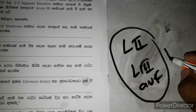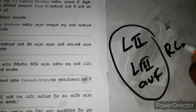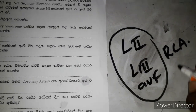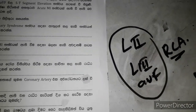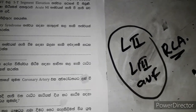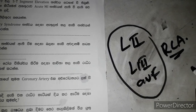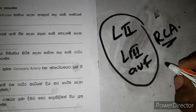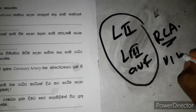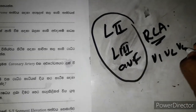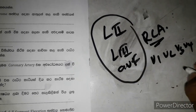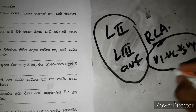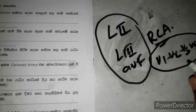AVF is the inferior wall. The inferior wall blood supply comes from the right coronary artery (RCA). V1, V2, V3, V4 correspond to the LAD (Left Anterior Descending artery).